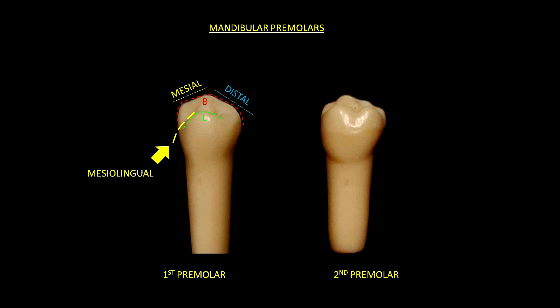Regarding the second mandibular premolar, it is very easy to identify as we have three cusps. We have a major massive buccal cusp. By the lingual view, we can also see a mesiолingual cusp which is large and a small distolingual cusp. These differences in size of the lingual cusps are going to help us identify the right from the left second mandibular premolar. We have to look for the smallest cusp, and that one is going to be the distolingual cusp.